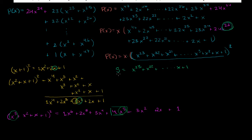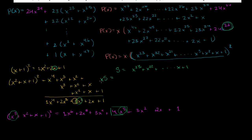Now let's multiply s times x. So x times s is going to be x times x to the 23, which is x to the 24th power. x times x to the 22nd is x to the 23rd power. And then continuing down — there's going to be x to the 22nd, all the way down to when you multiply x times x, you get x squared, and then 1 times x gives you x.